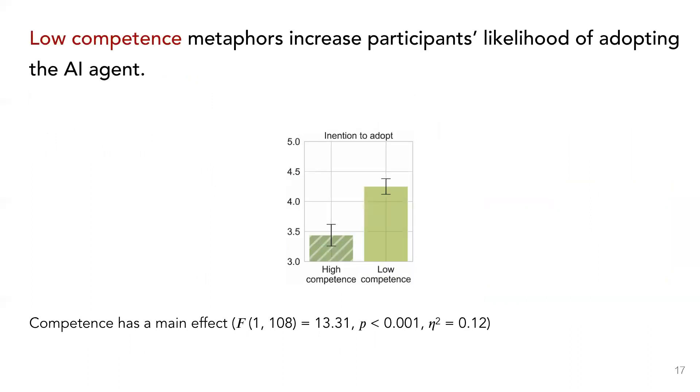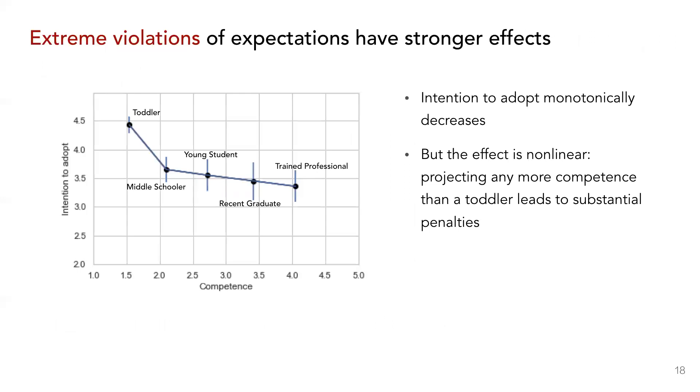We find that participants are more likely to adopt an agent that projects low competence, and they are less forgiving of mistakes made by AI systems that project high competence. We do not observe effects of warmth on their adoption intentions. These results suggest that it's better to lower initial user expectations by projecting low competence and to then positively violate those expectations. Interestingly, we find that the relationship between competence and adoption intentions is non-linear, and more extreme violations of expectation lead to stronger effects.